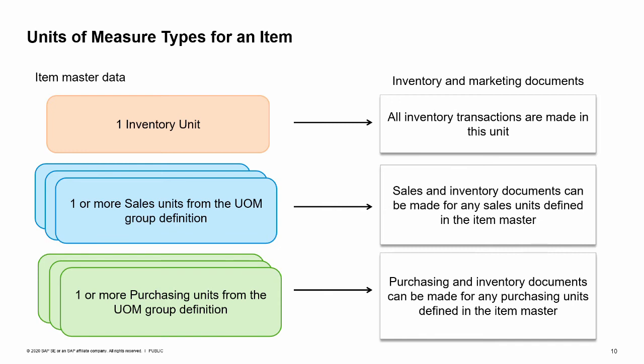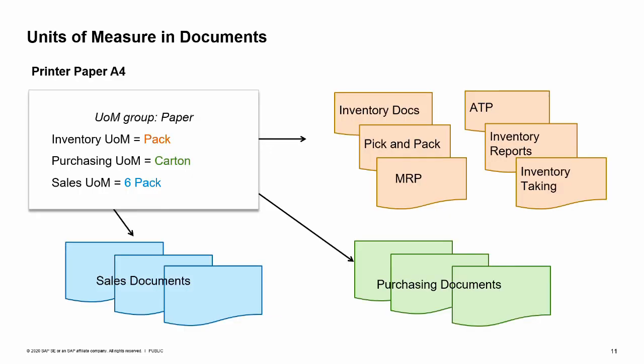All inventory tracking and reporting is done in the inventory unit of measure, and availability checking is also done for the inventory unit of measure. In our business example, we set the inventory unit of measure to PAC — therefore, PAC will appear as the unit on all inventory transactions. We set carton for the purchasing unit of measure because this is the typical unit used by our vendors. Regardless of how we buy it, we may choose to sell a product with different packaging. In our example, paper is most often sold packaged as a six pack, so we set the sales unit of measure to six pack as the default for our sales documents.